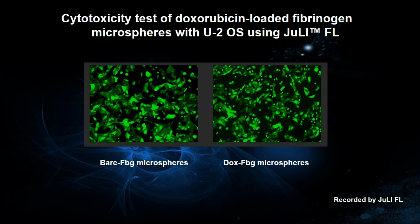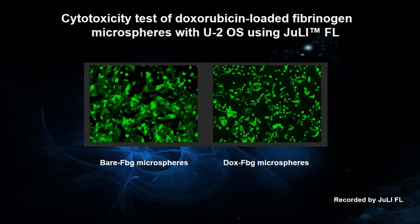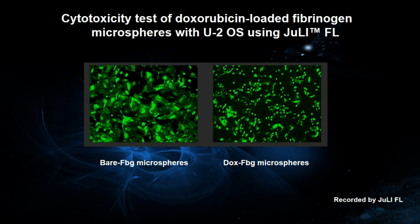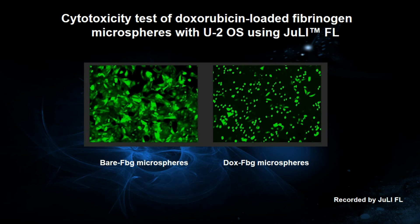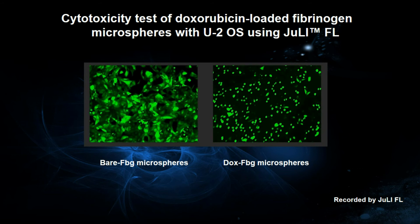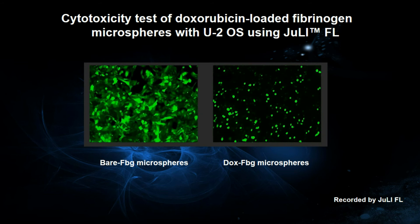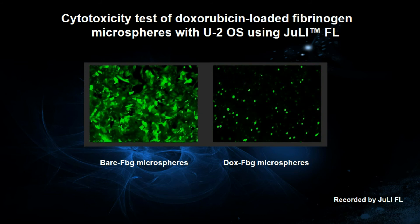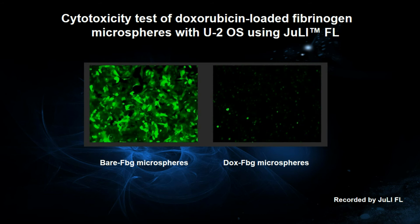From the initial confluency of 45% for both microspheres, the final confluency of Doxorubicin-loaded Fibrin Microspheres was at 23%, and 70% for bare Fibrin Microspheres. As a result, a significant decrease of 23% was observed for Doxorubicin-loaded Fibrin Microsphere-treated cells, revealing continuous cell deaths by the function of Doxorubicin.